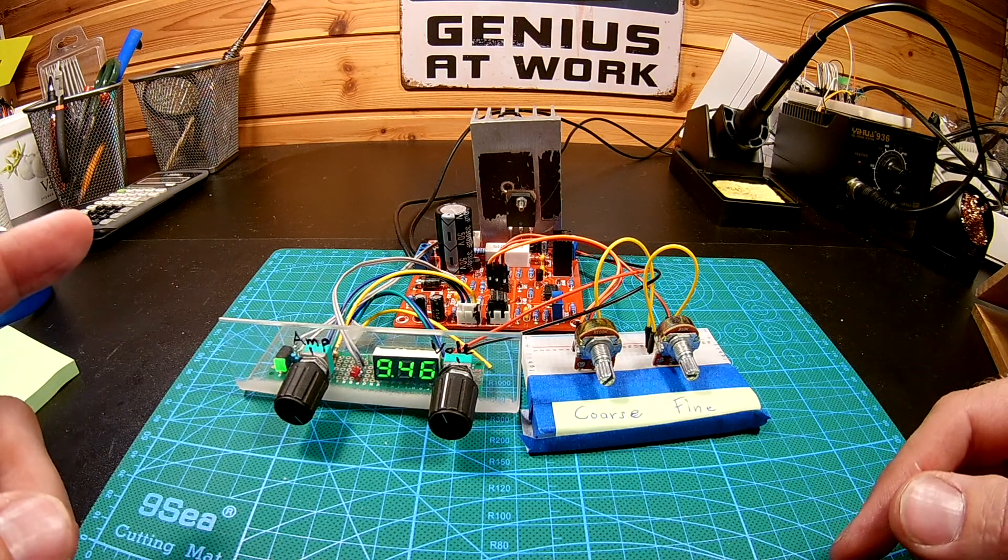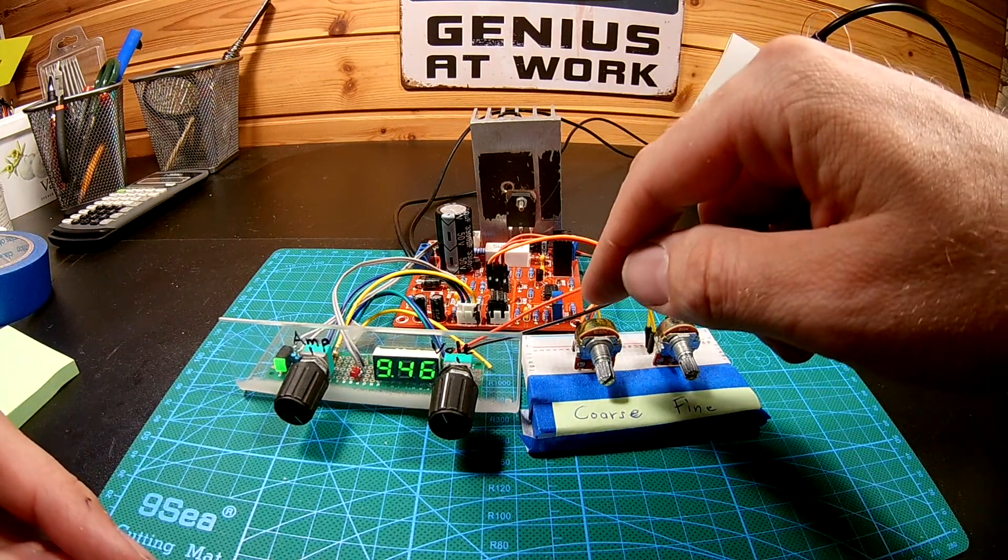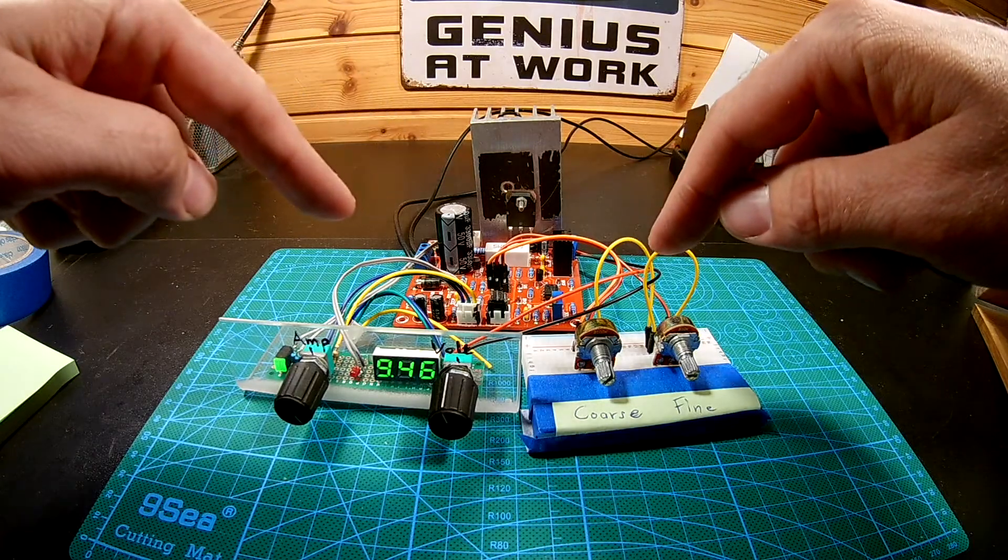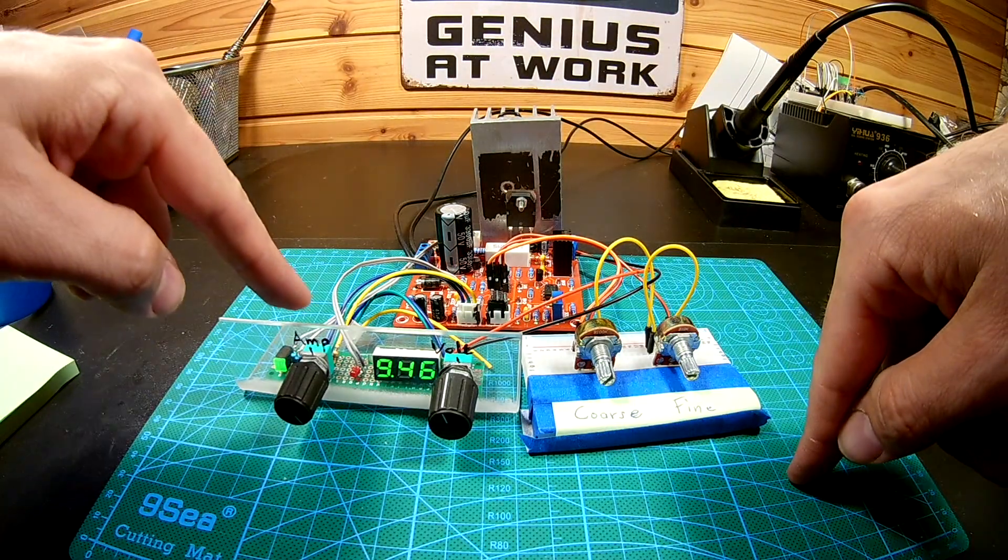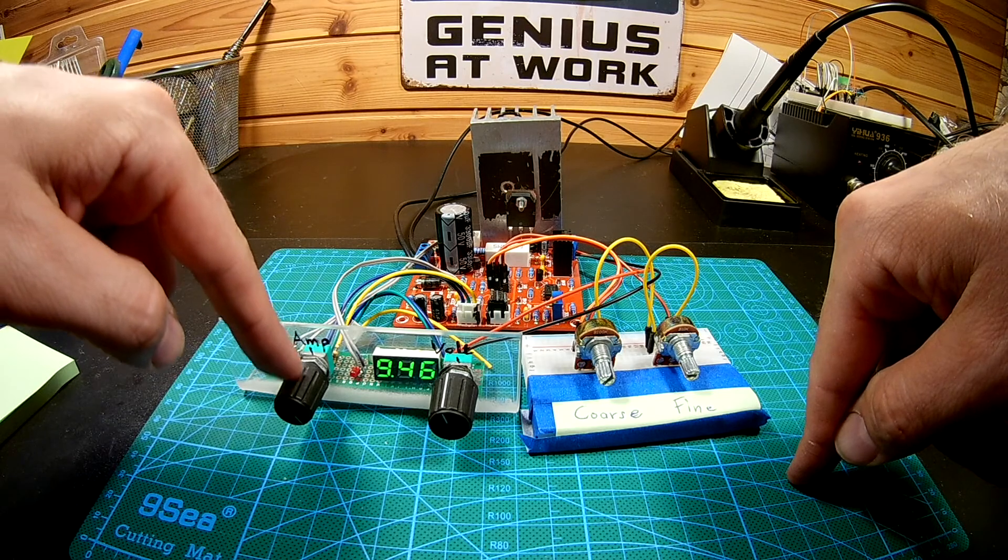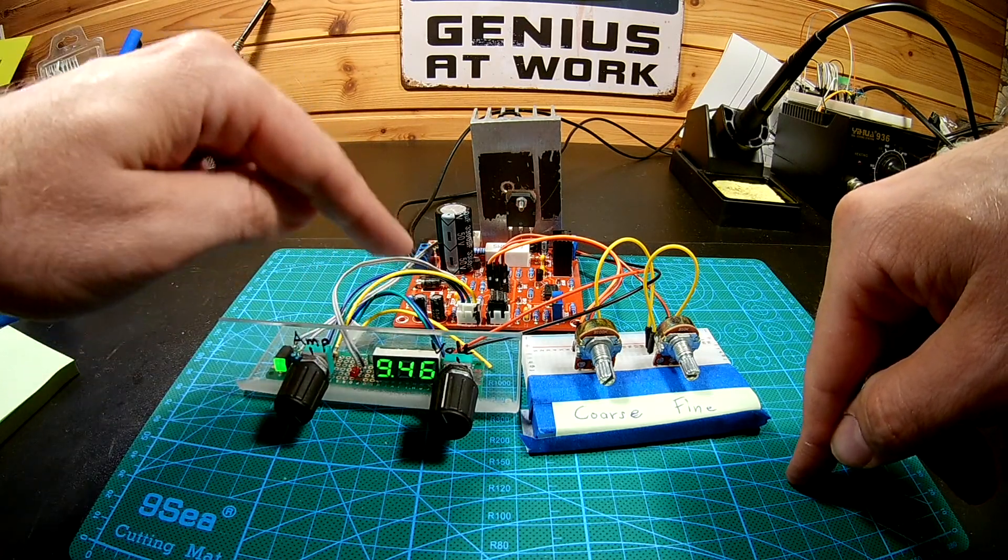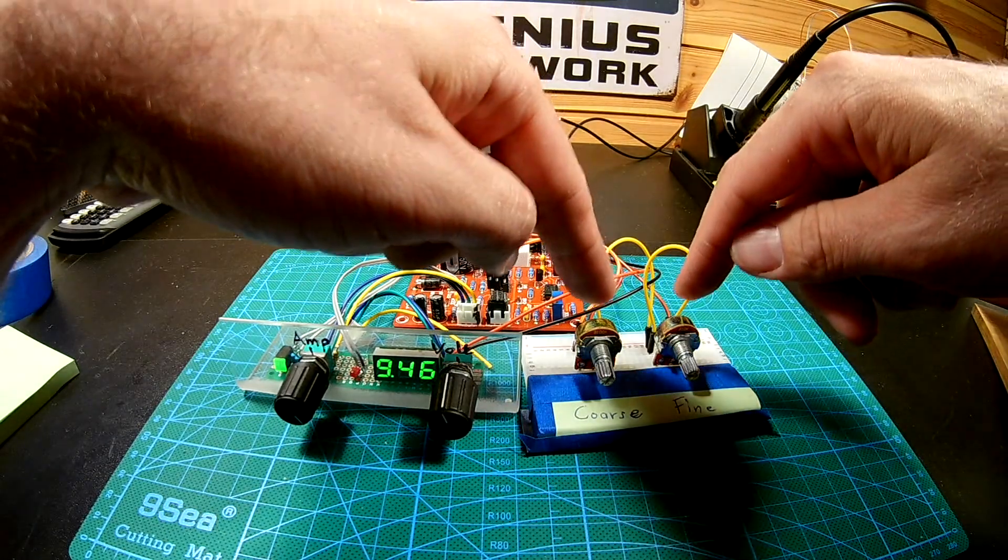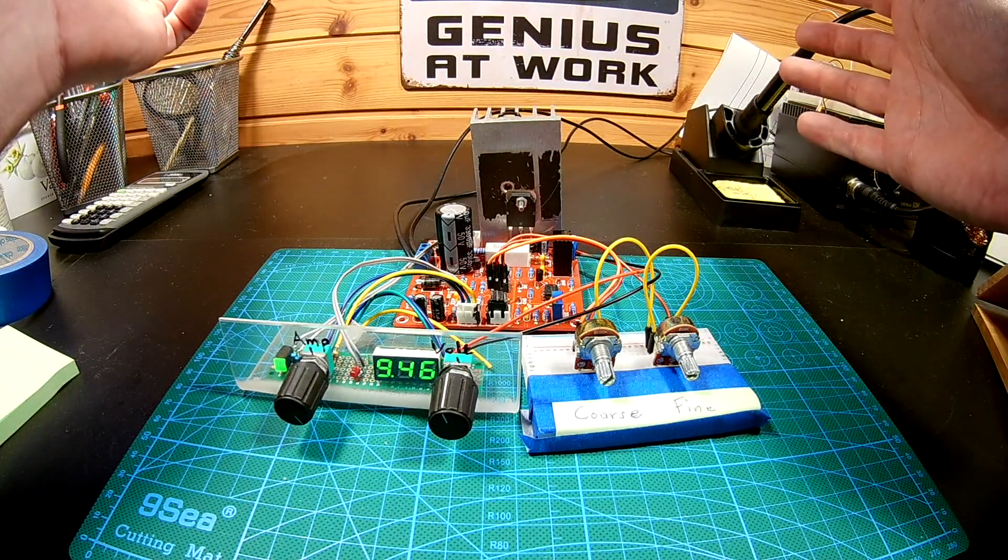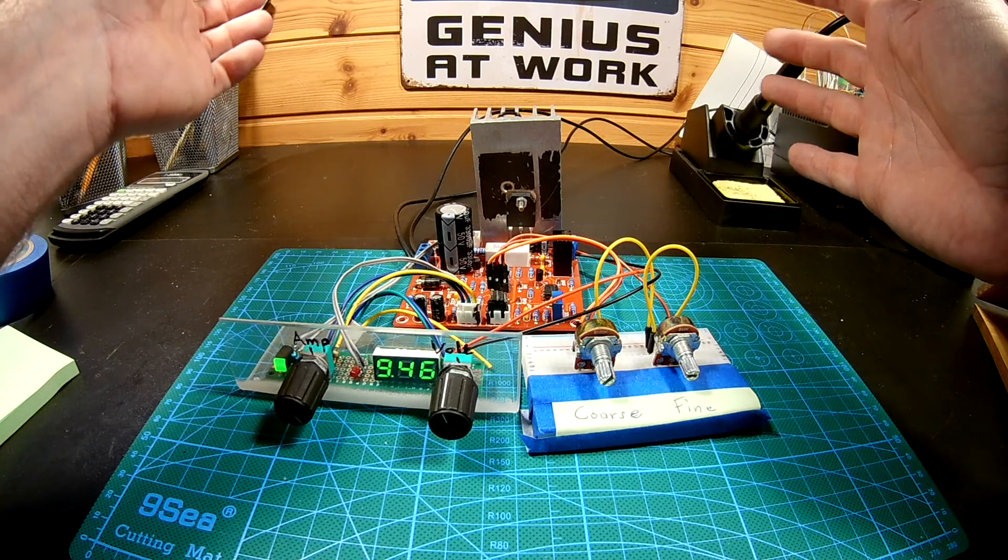The problem is that the setting point I have now, I have four dials here, only three is connected. The amp, so current limitation is still working, and this used to be a voltage setting which I turned about. And now I have two potentiometers for setting the voltage. And why do I want that?